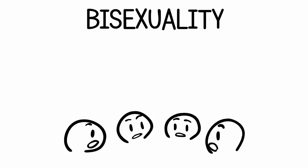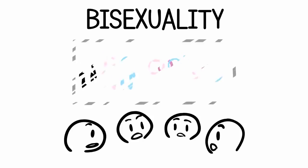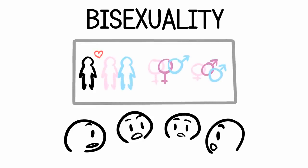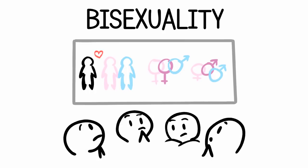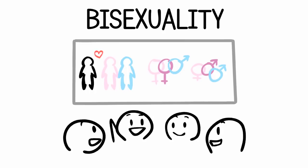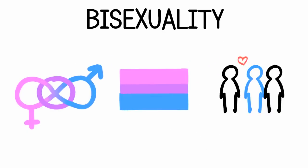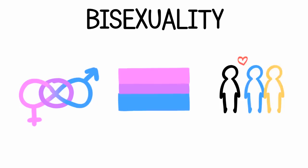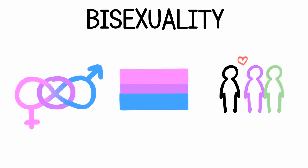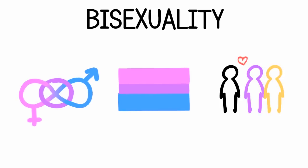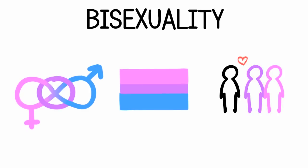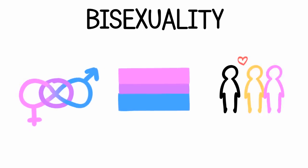1. Bisexuality. The definition for bisexuality is actually something that's debated. Originally, the standard definition was attraction to both genders. However, as understanding of gender has evolved, people have argued for an evolved definition of bisexuality. Some use the definition of attraction to your own and other genders to incorporate non-binary genders within its definition. Some famous examples of people who are bisexual are Brendon Urie from the band Panic at the Disco and actress Angelina Jolie.